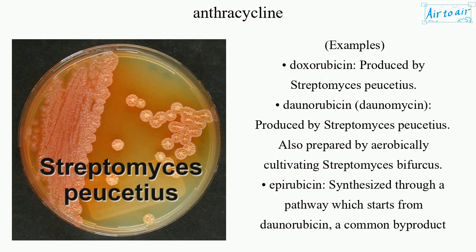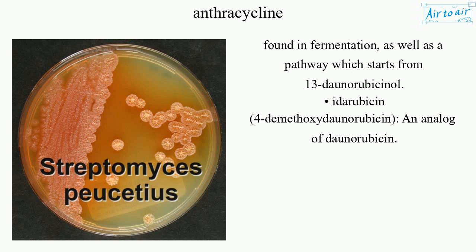Examples. Doxorubicin, produced by Streptomyces peucetius. Daunorubicin, also known as Daunomycin, produced by Streptomyces peucetius, also prepared by aerobically cultivating Streptomyces bifurcus. Epirubicin, synthesized through a pathway which starts from Daunorubicin, a common byproduct found in fermentation, as well as a pathway which starts from 13-Daunorubicinol. Idarubicin, 4-Demethoxydaunorubicin, an analog of Daunorubicin.